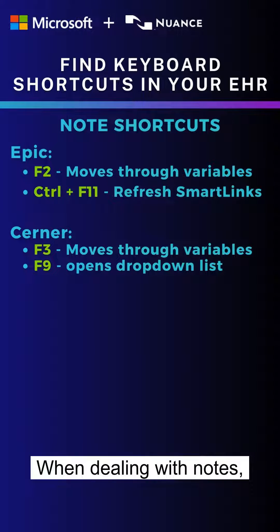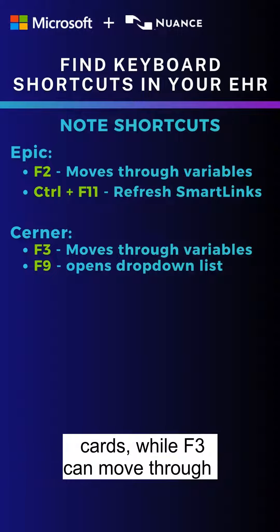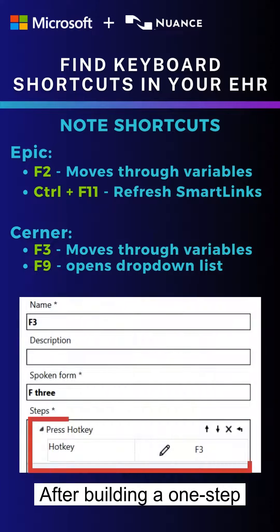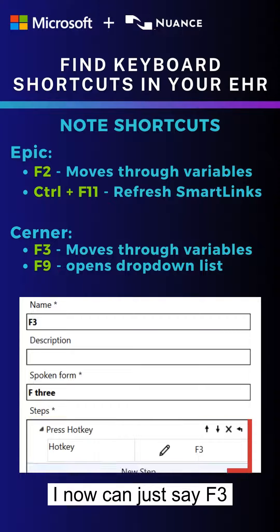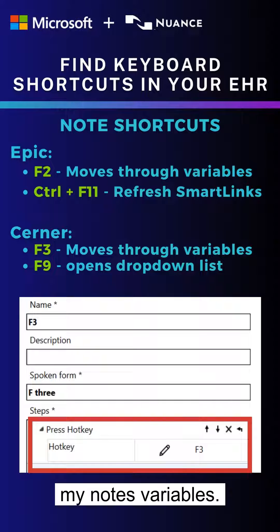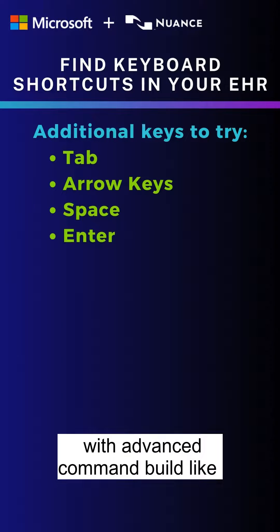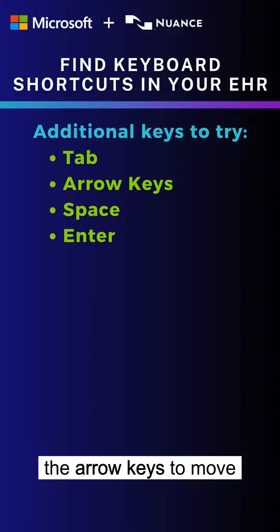When dealing with notes, F2 can move through Epic's wildcards while F3 can move through Cerner's free text fields. After building a one-step command consisting of press hotkey F3, you can now just say F3 to move through your notes variables. Don't forget basic keys can help with advanced command building, like Tab to move through sections or the arrow keys to move your cursor's focus.